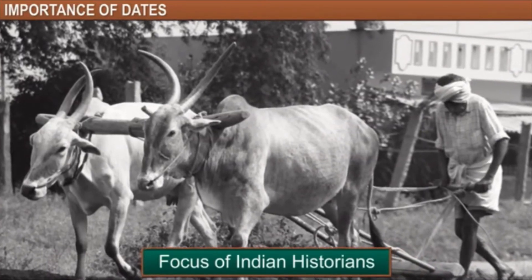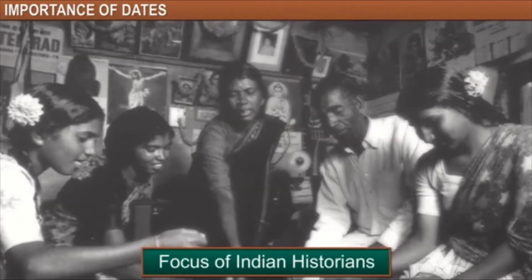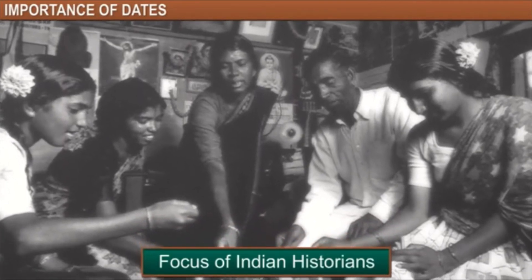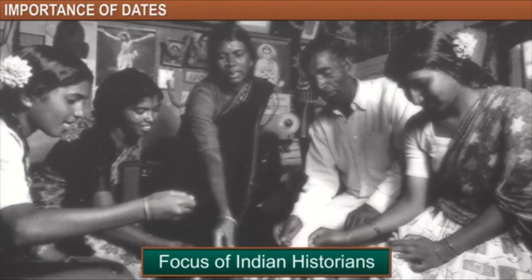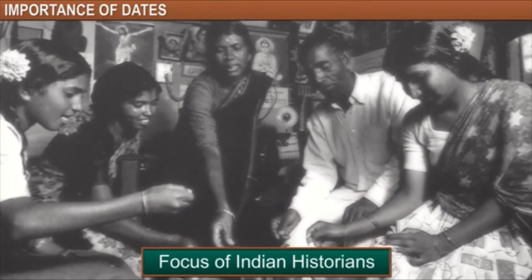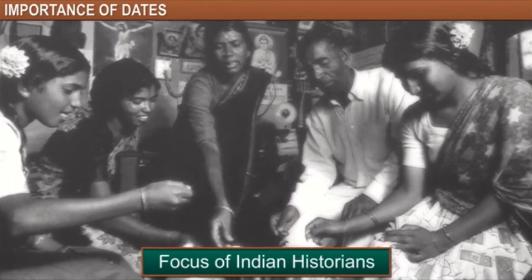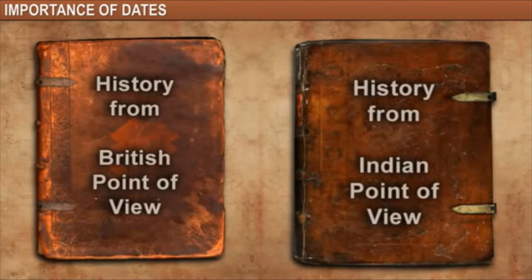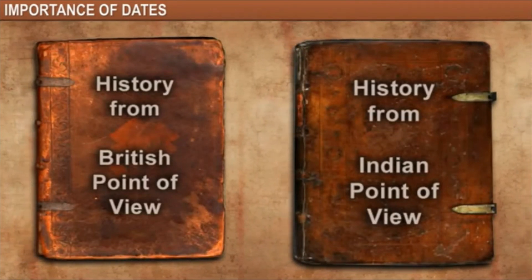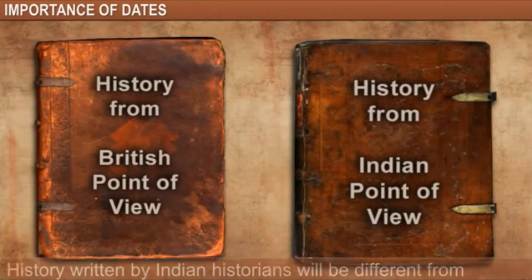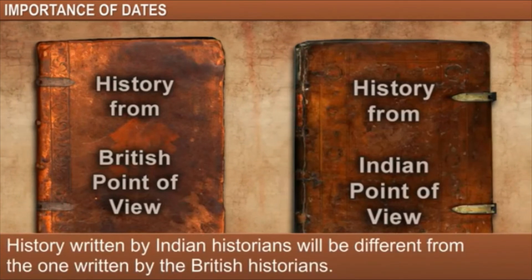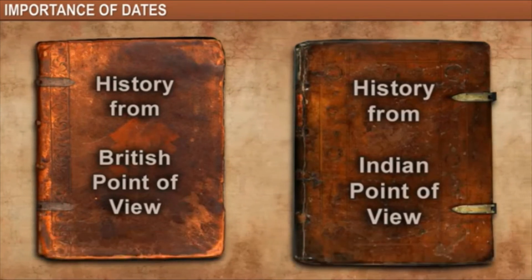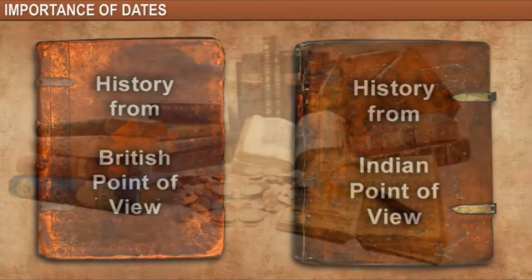An Indian historian would write about the lives of the common people — their means of livelihood, the food they ate, the clothes they wore — and continue with changes in social norms. This account would be very different from the one written by British historians; however, both these views on history are correct.